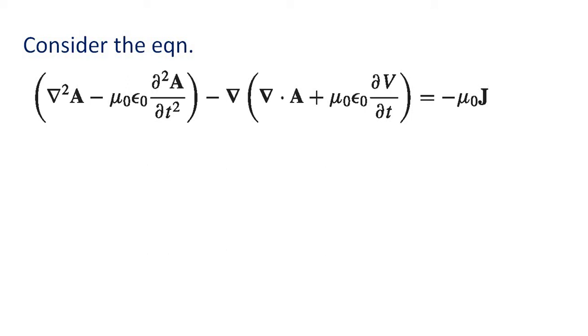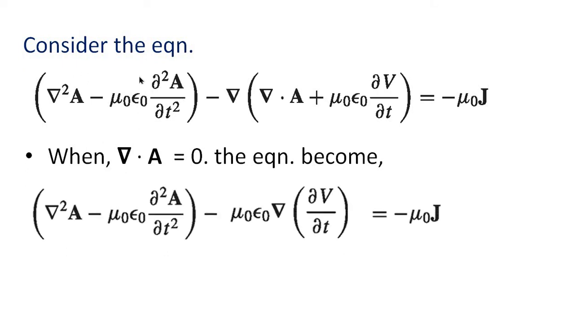Now, applying the Coulomb gauge, that is del dot A equal to 0, and substitute here. Then the equation becomes: first term remains, the del dot A term becomes 0, minus del of mu 0 epsilon 0 dV by dt. That is mu 0 epsilon 0 del dV by dt. That is equal to minus mu 0 J.